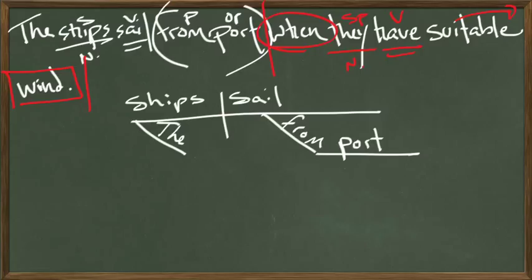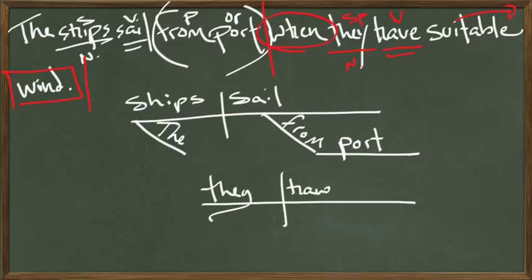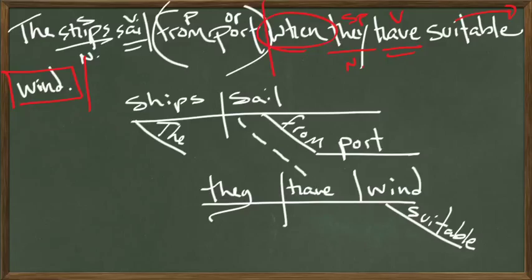And then we're going to treat this clause, this adverbial clause, as its own sentence. They have, what do they have? They have this direct object here. They have wind. Direct object goes on the main line, always after a half stick. They have suitable wind. So how do we connect them? Well, we just connect the verbs, actually. And we put wind on the line. The ships sail from port when they have suitable wind.